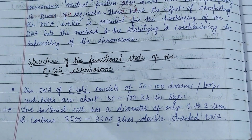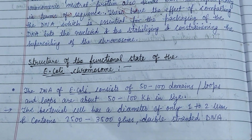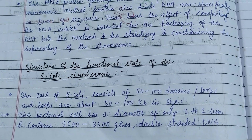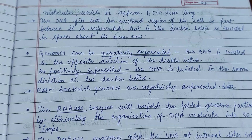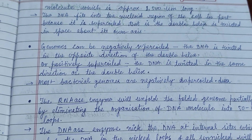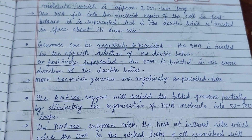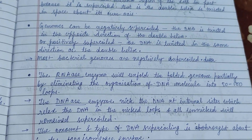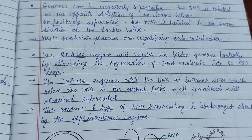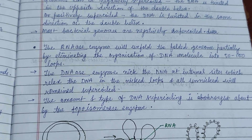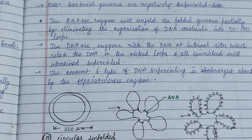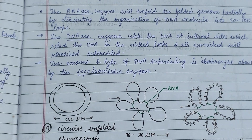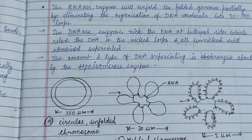The structure and functional state of the E. coli chromosome involves 50 to 100 domains or loops, and the loops are about 50 to 100 kilobases in size. Genomes can be negatively supercoiled or positively supercoiled. The RNase enzyme will unfold the folded genome partially by limiting the organization of the DNA molecule into 50 to 100 loops.